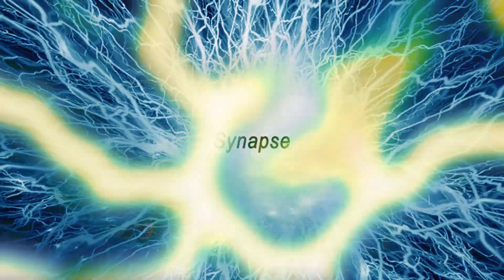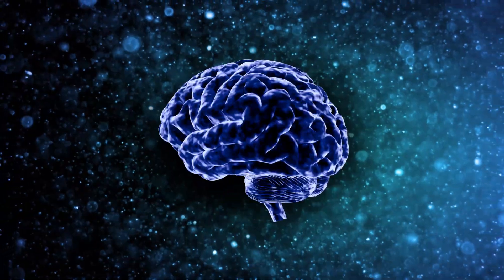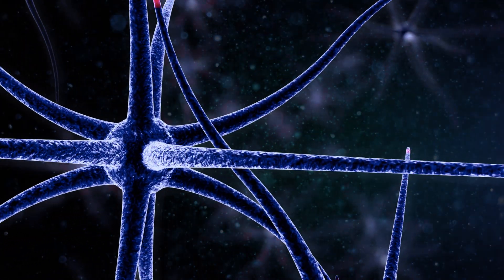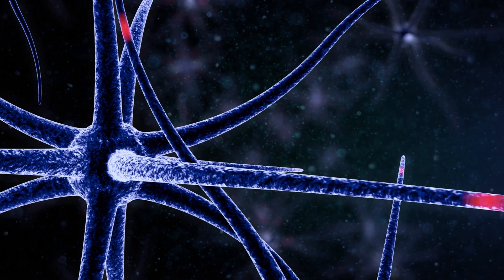Within the synapse, this is where neurotransmitters are deposited through presynaptic boutons and received by neurotransmitter receptors. And this is where all the neurotransmitters take place.